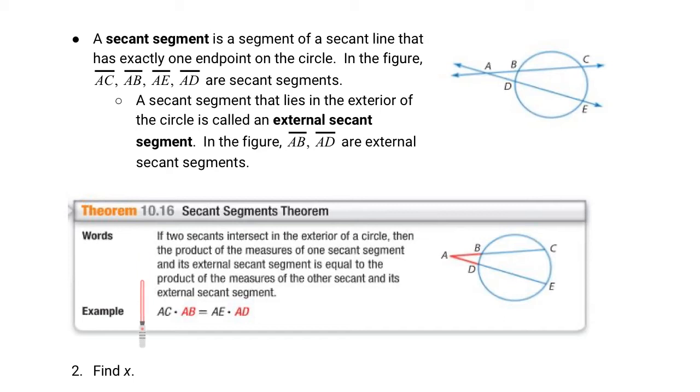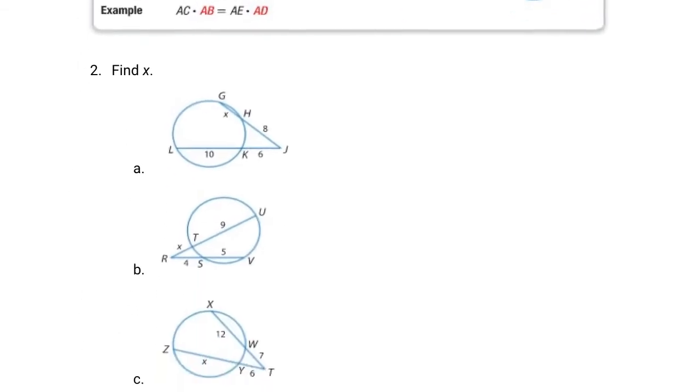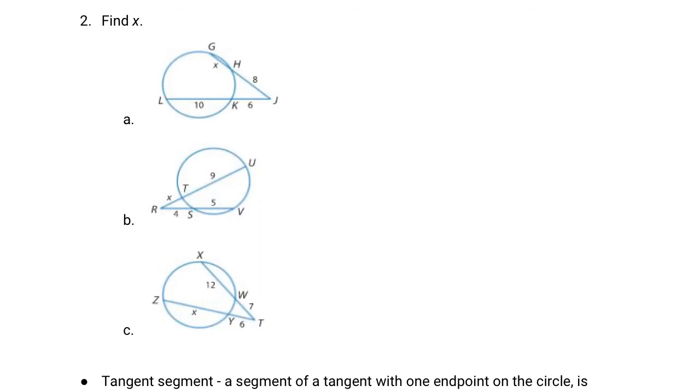If we look at theorem 10.16, if two secants intersect in the exterior of a circle, like angle A here, then the product of the measures of one secant segment and its external secant segment is equal to the product of the measures of the other secant and its external secant segment. So in other words, it's going to look a lot like our last equations did. AC times AB is going to equal AE times AD, just multiplying the segments together, and they should be equivalent. Let's try it out.